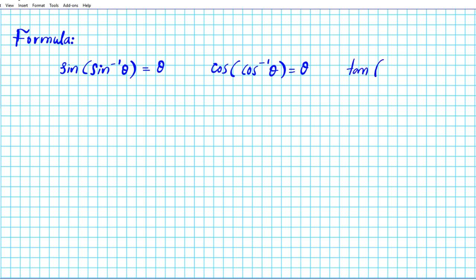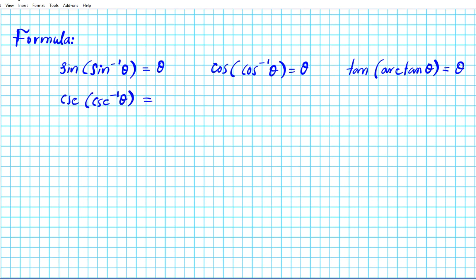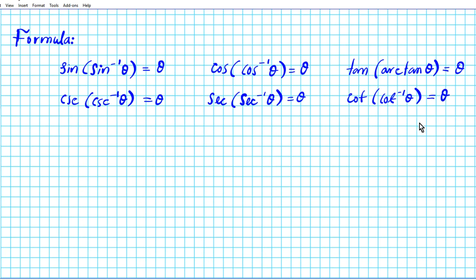The same applies with tangent. If you take tan of the inverse tan of theta — which can be written as arctan of theta — the tan and the arctan cancel out since they're inverse trig functions, and you're left with theta. The same applies to the reciprocal trig functions: cosecant of the arc cosecant of theta gives theta; secant of the inverse secant of theta gives theta; and cotangent of the inverse cotangent of theta also gives theta.